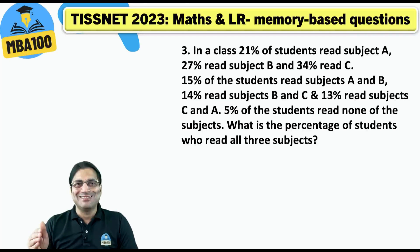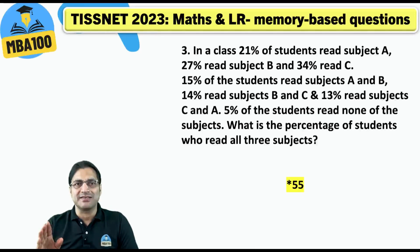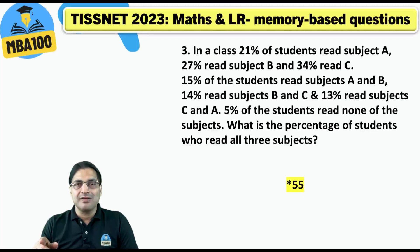Here is another faulty question. The intended answer is 55 percent. If you put the formula, this is what you get. But there are many things that would make you believe that the question itself is erroneous — it's inconsistent, it's not possible. In a class, 21 percent of students read subject A, so the total percentage reading all three will certainly be less than or equal to 21 percent. All the options were above 21 percent.